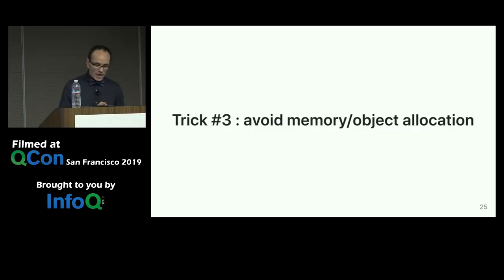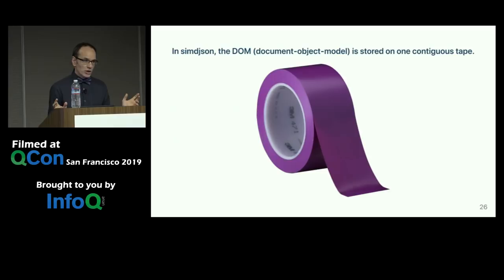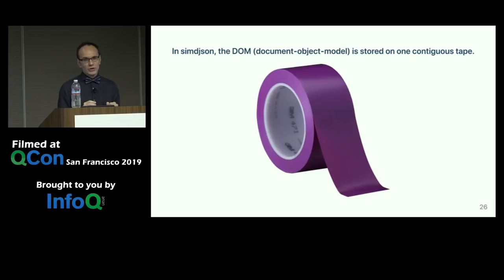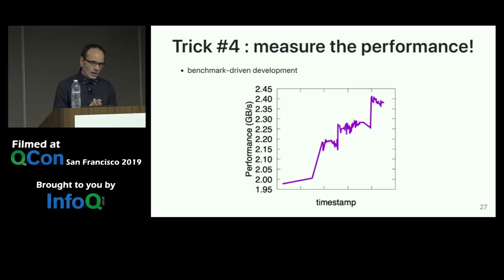Another trick — nothing revolutionary — is to avoid memory and object allocation as much as you can. In simdjson we use what we call a tape. When parsing the JSON document, everything gets written to one reusable tape. Whenever we encounter a string, we don't allocate memory for it. Whenever we encounter a number, we don't allocate memory for it. Everything gets written consecutively.